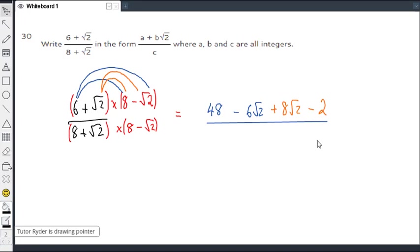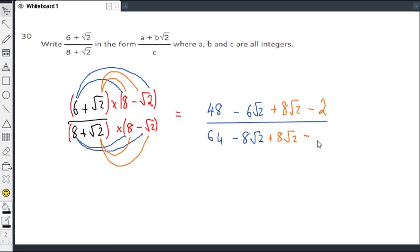So we're going to get, firstly, 8 times 8. That's 64. Then we're going to get 8 times minus root 2, which is going to be minus 8 root 2. Then we're going to get root 2 times 8, which is plus 8 root 2. Then we're going to get root 2 times minus root 2. Minus times a plus is a minus. And root 2 times root 2 is 2.